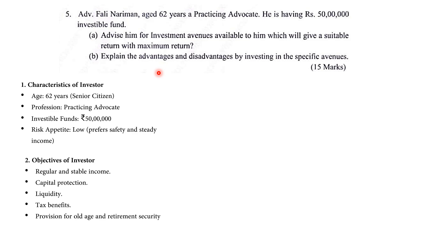Step number 2 is the objective of the investor. What are the objectives? Note down what they want: suitable return, regular and stable income, capital protection, liquidity, tax benefit, and provision for old age and retirement security. The second, third, and fourth points can be used for any case study because they are generally the same for all investors.